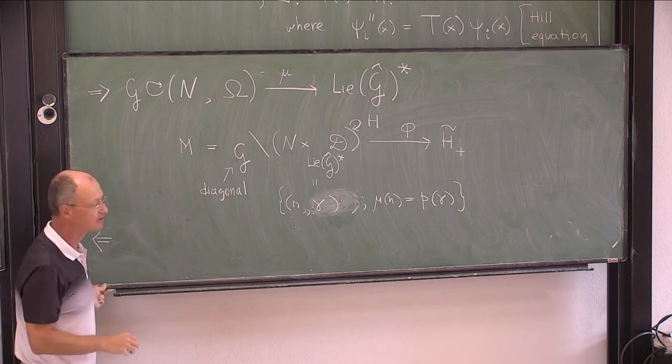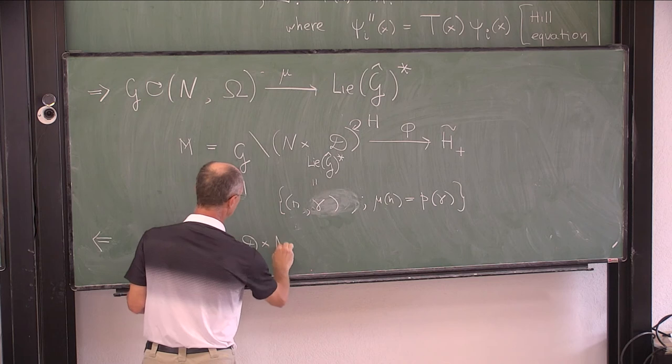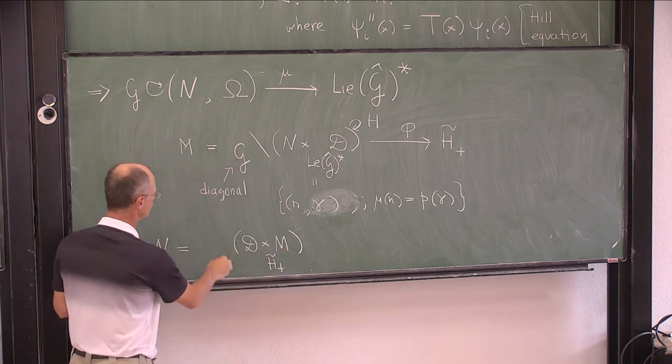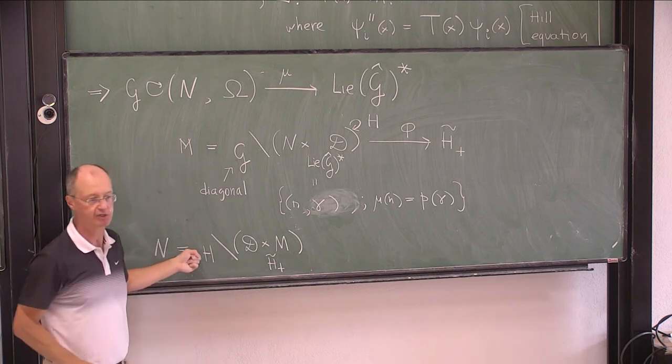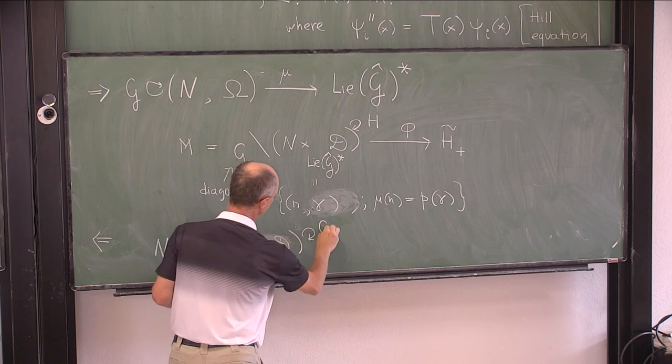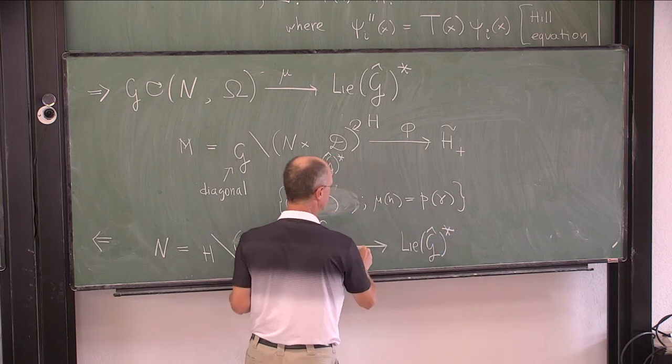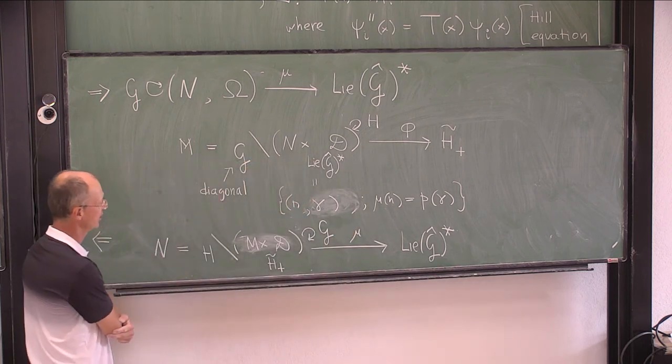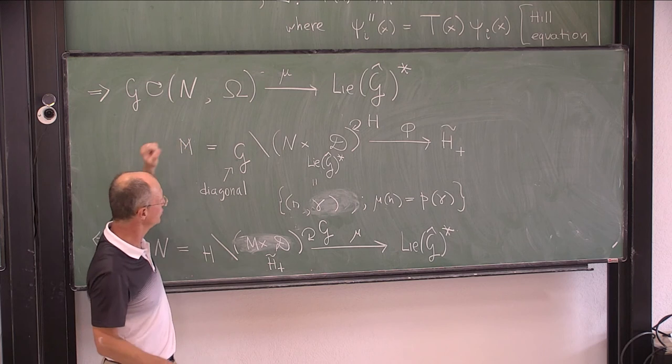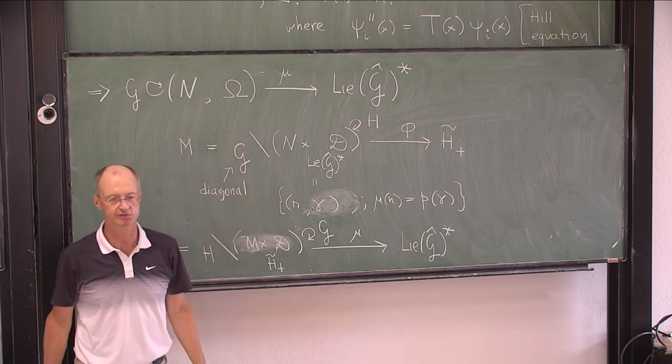That's in one direction. You can imagine in the opposite direction, if you're given M, you can build N. Now you take, again, M×D over H̃₊ - you divide by the diagonal action of H. And D still has an action of Ĝ, and it has a map to Lie(Ĝ)*. The construction works symmetrically in both directions. That's where the real work is - you need to figure out what to do with 2-forms. But you can also figure out what to do with 2-forms.